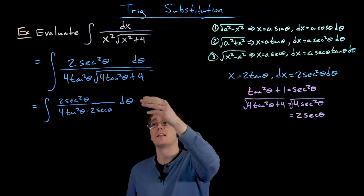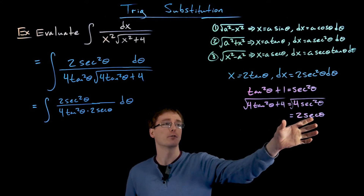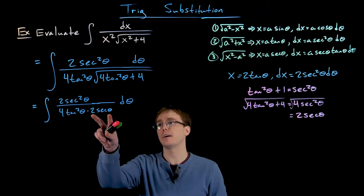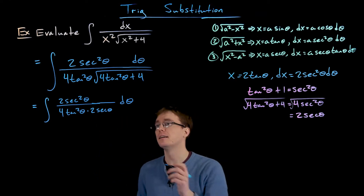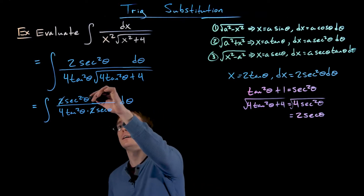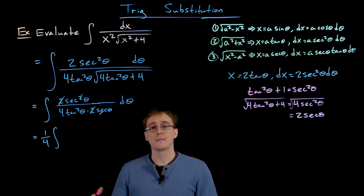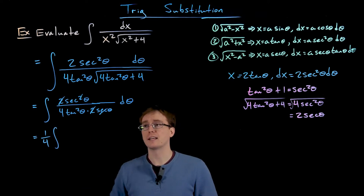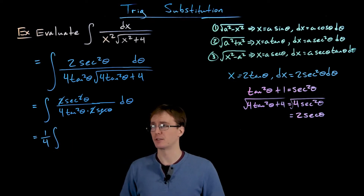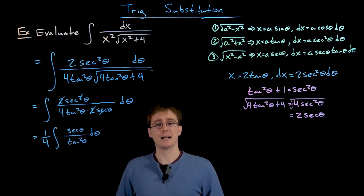Going from our second line to our third line, we apply the Pythagorean identity result: the square root of 4 tangent squared of theta plus 4 simplifies to 2 times secant of theta. Now we can do further simplifications — the factors of 2 in the numerator and denominator cancel, and we can cancel one factor of secant of theta. We're left with secant of theta over 4 times tangent squared of theta, and we pull the 1/4 out of the integral.